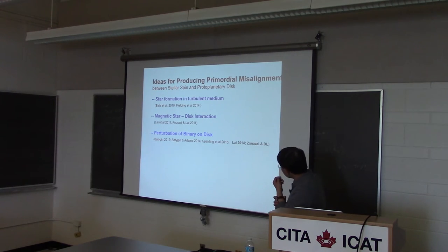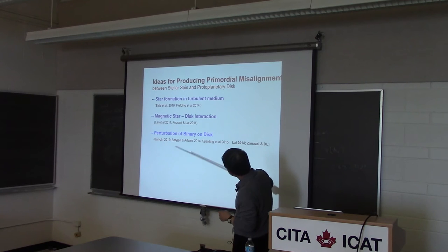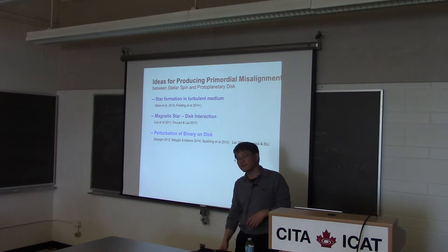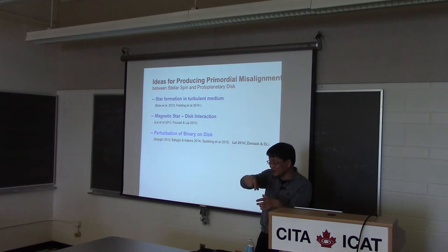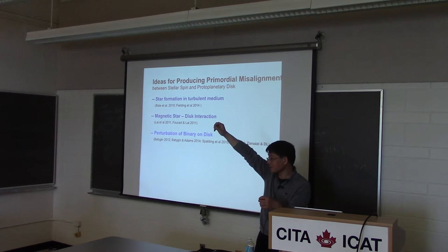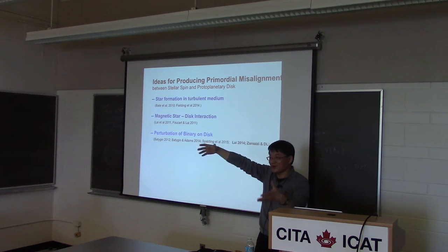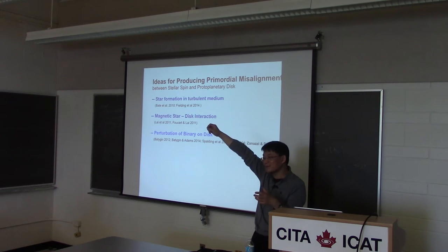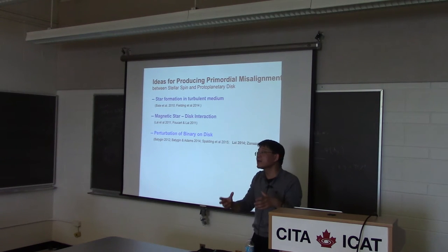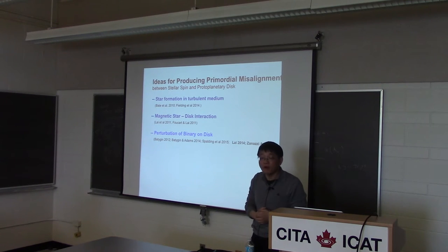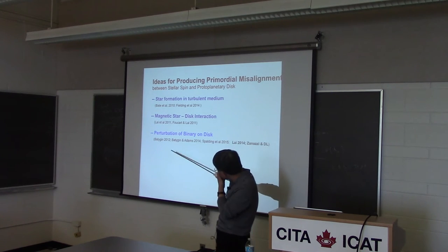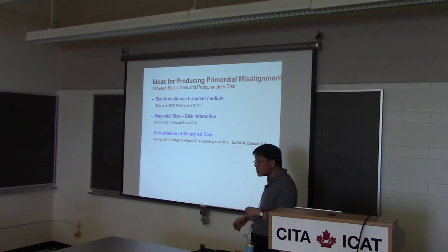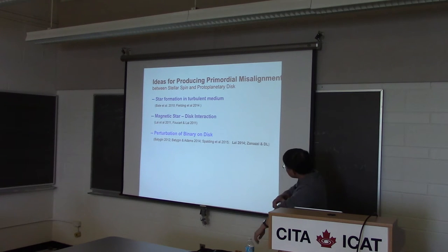And finally, there's the possibility of a binary. You form a protostar with a disk, the disk happily orbiting around the star, and suppose you have a binary companion. Stars usually form in binary systems. The binary tidal torque from the binary can act on the disk, can change the orientation of the disk, and this may give rise to misalignment. This idea was first put forward by Bate and collaborators. So we did some work on this, and I want to first talk about this.